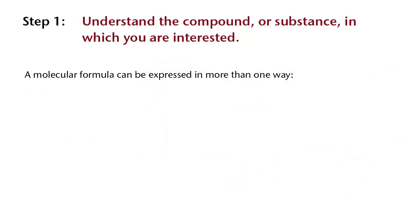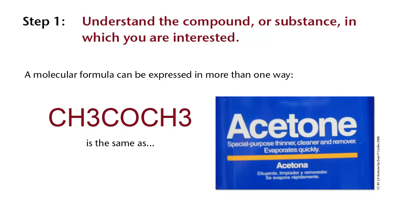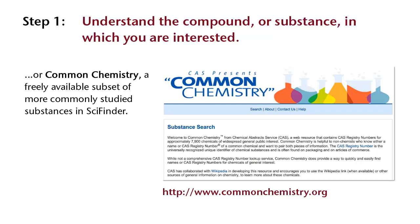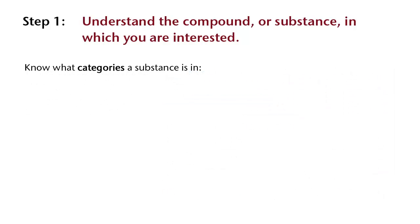The molecular formula of a chemical substance may even be expressed in more than one way. For example, CH3COCH3 is the same as C3H6O — they just use different conventions for the order of the chemical symbols. A good place to find additional names and identifying information for substances is SciFinder. Another option is Common Chemistry, a freely available subset of more commonly studied substances in SciFinder. Knowing what categories this substance is in can also be helpful because there may be a book or database devoted to that particular type of substance.